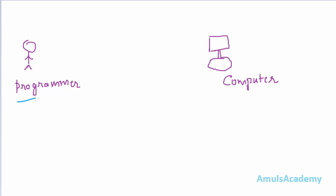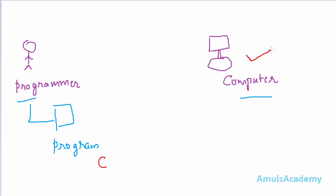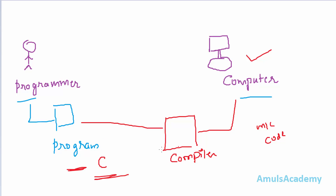In short, there will be a programmer who wants to give some instructions to the computer. Those instructions are called a program, and here the programmer will give instructions in the C programming language. C is a middle level language — it is human readable. The computer won't understand middle level language; it only understands machine level language. So we need a program to convert this middle level language to machine code, and that program is called a compiler. This compiler converts middle level language to machine code, which is why C is called a compiled language.